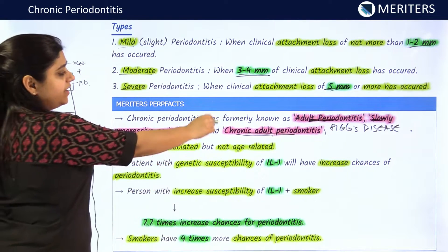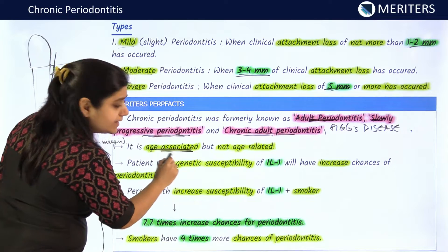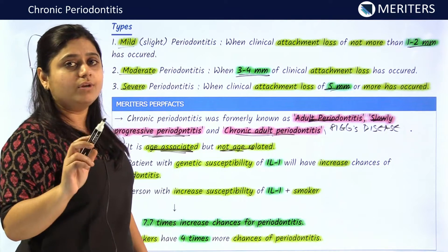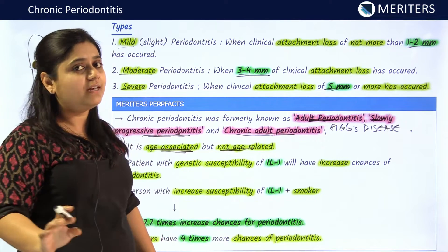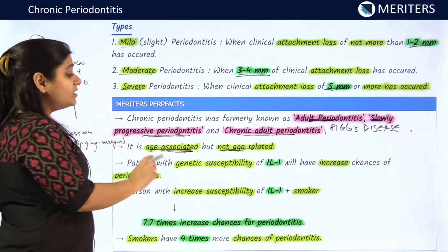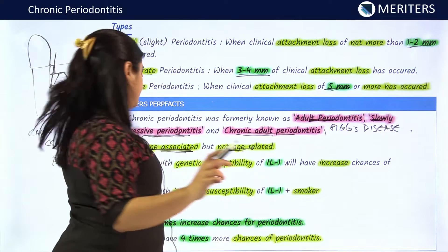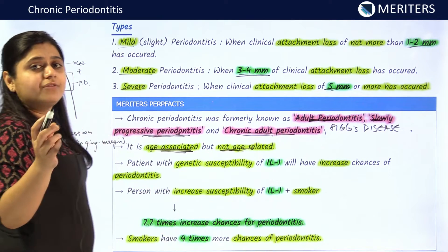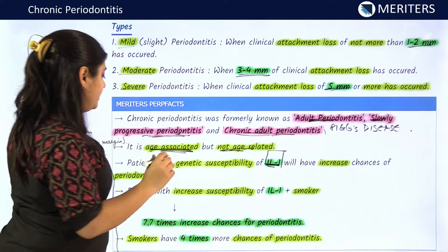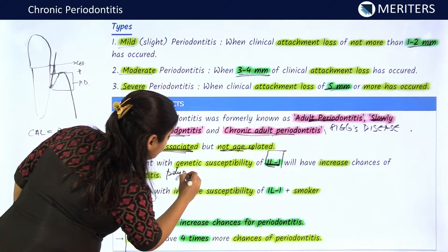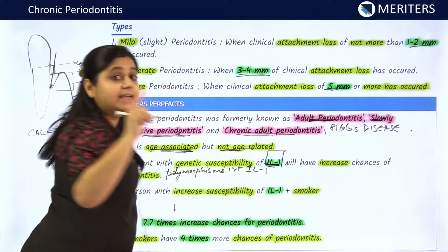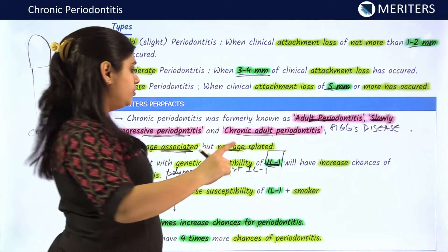Chronic periodontitis is an age-associated disease but not age-related. We cannot define a certain age associated with chronic periodontitis — patients with more than 30 years of age are not the only ones affected; even younger patients can be affected. Remember, it is age-associated but not age-related. Patients in whom polymorphisms of interleukin-1 are seen are more susceptible to chronic periodontitis.